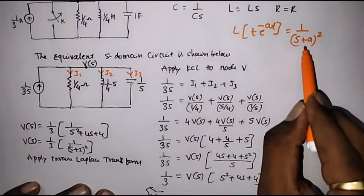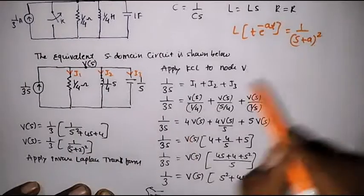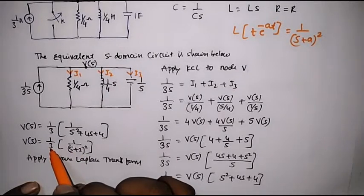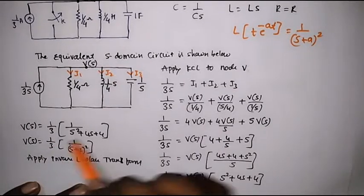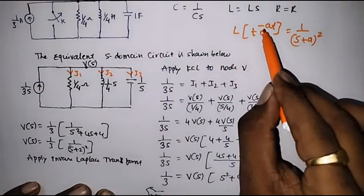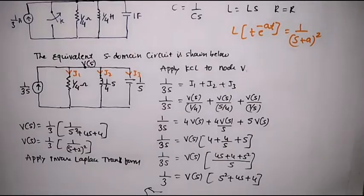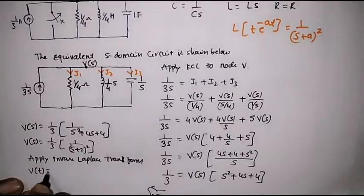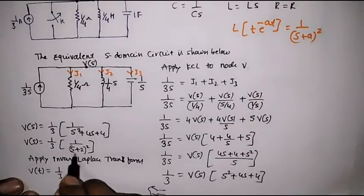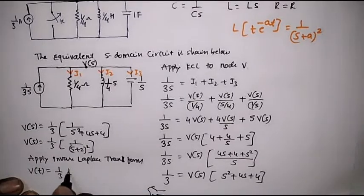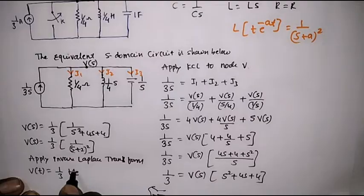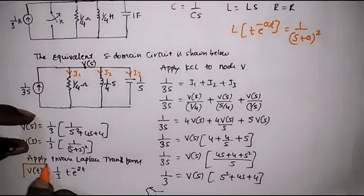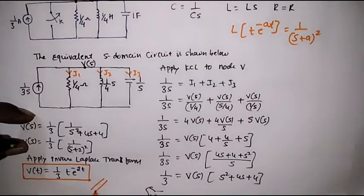We know that the Laplace transform of t·e^(−at) equals 1 upon (S plus a) whole squared. Here the value of a is 2, so this equation matches our expression with a equal to 2. Therefore, the inverse Laplace transform gives V(t) equal to 1/3 · t · e^(−2t). This is the required V(t) for the given problem.